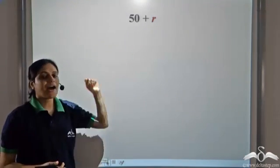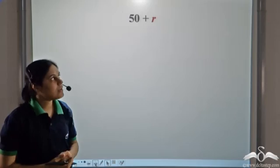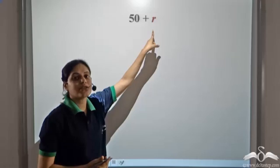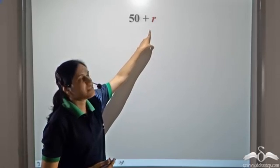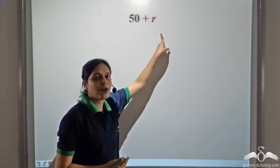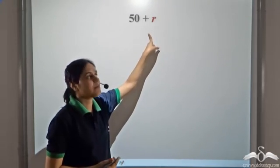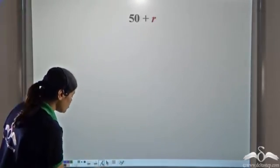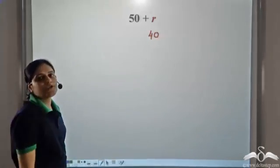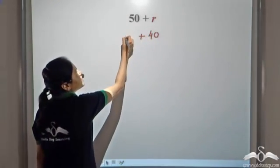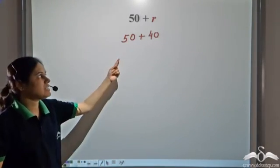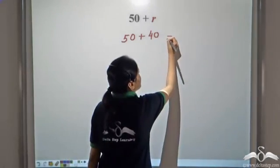Wait a minute. How can I add an alphabet to a number? Well, over here r is not an alphabet. r is a symbol which represents a number. So we are adding 50 to an unknown number represented by the symbol r. Once we know the value of r — say r is 40 — we can write it as 50 plus 40, so actually we are adding 2 numbers, which gives us 90.